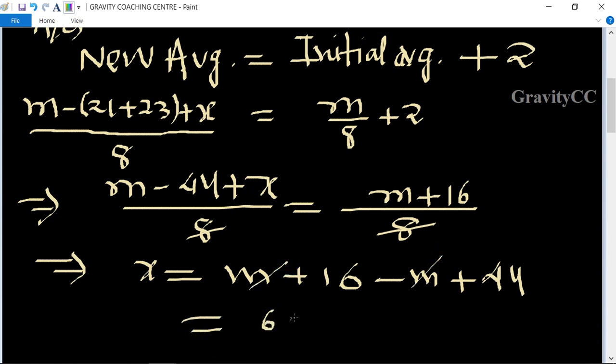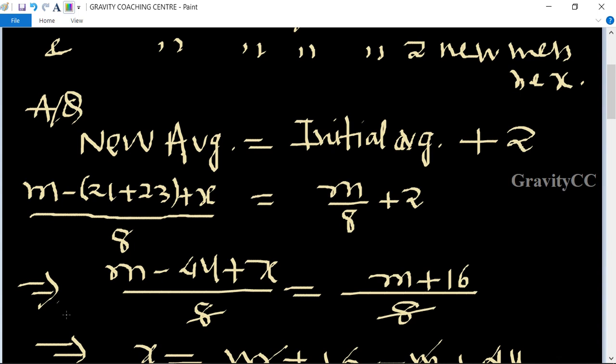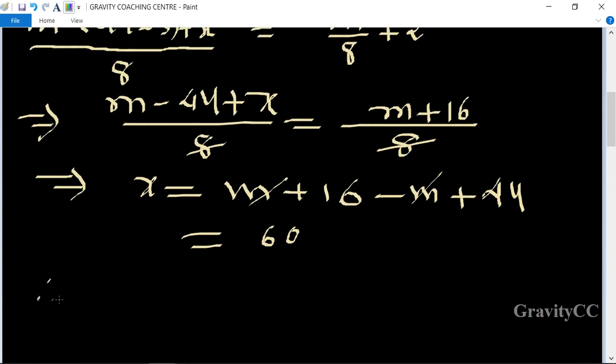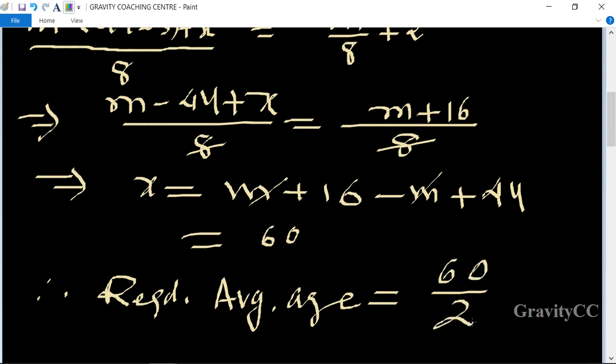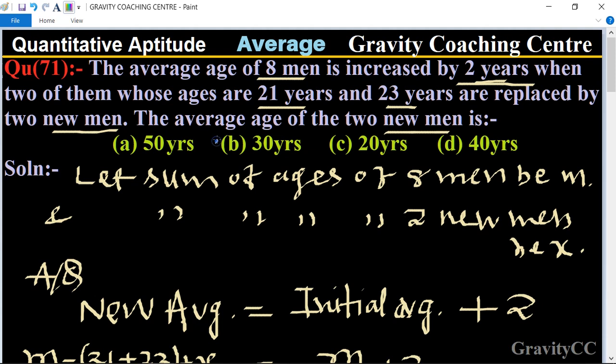Equals 60. Now find the average age of two new persons. Therefore required average age equals 60 by 2, which is 30. So 30 years, which is the required average age answer. So the option B is the correct answer.